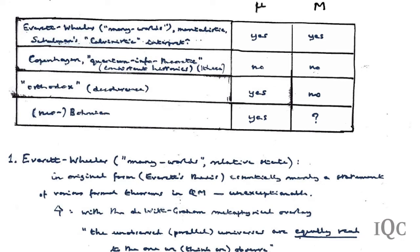The Neo-Bohmian interpretation certainly says yes, at the microscopic level the symbols of quantum mechanics correspond to something in the real world. There is a wave function corresponding to a real pilot wave. There is also something not in the standard formalism: a particle with a definite position. The state vector certainly corresponds to something in the real world.